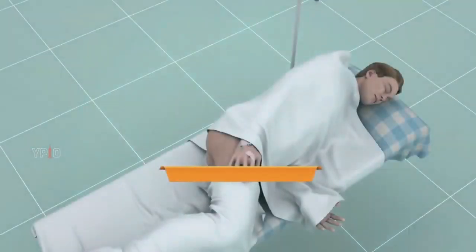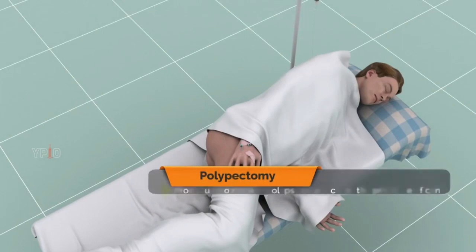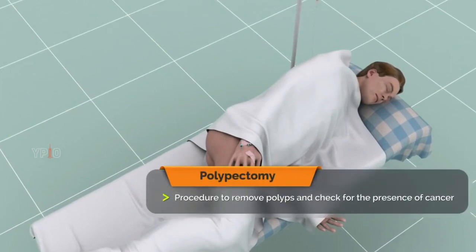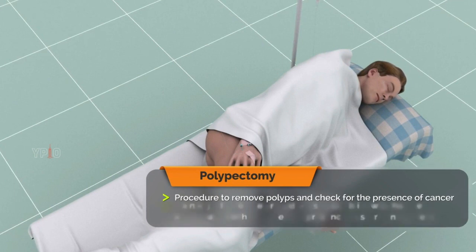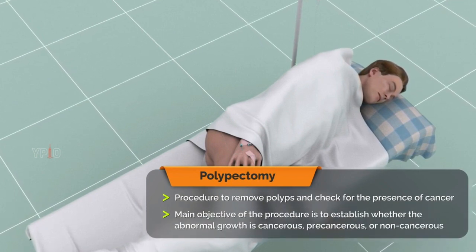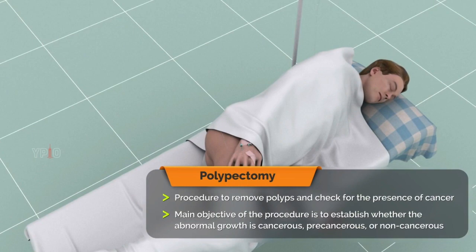In summary, a polypectomy is a routine procedure to remove polyps and check for the presence of cancer. The main objective of the procedure is to establish whether the abnormal growth is cancerous, precancerous, or non-cancerous.